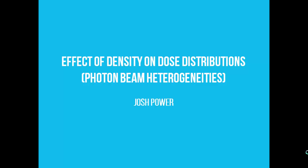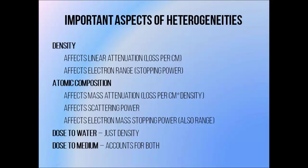In this video I'm going to be covering the effect of material density variations on megavoltage photon beam dose distributions. Both the density and the atomic composition of a material can affect the way radiation interacts inside it. The density affects the linear attenuation coefficient, so the number of photons that interact per centimeter travel in a medium, and also the electron range since the electron stopping power varies with density too.